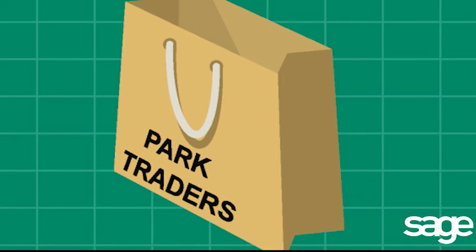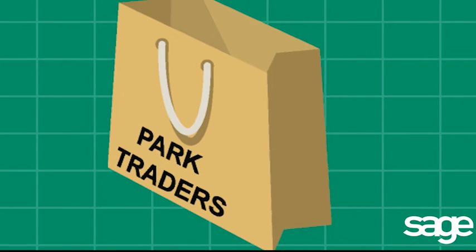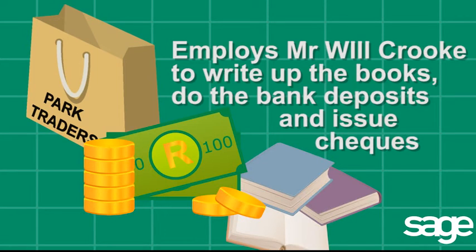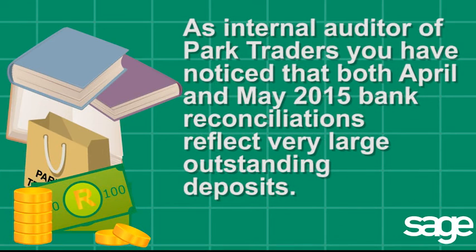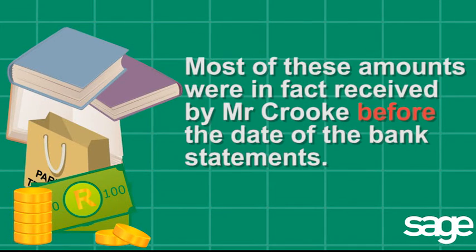Now let's look at a situation where the role of an internal auditor is called upon. Park Traders employs Will Crook to write up the books, do the bank deposits and issue checks. As internal auditor of Park Traders, you have noticed that both the April and May 2015 bank reconciliations reflect very large outstanding deposits. Your investigation shows that most of these amounts were in fact received by Mr Crook before the date on the bank statement.